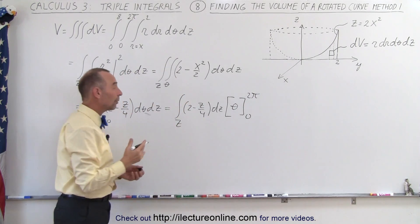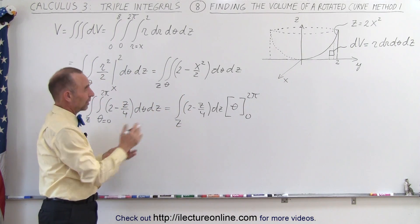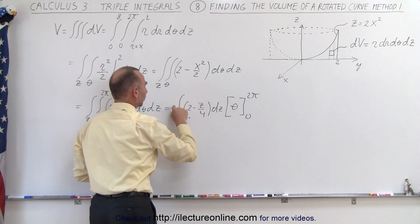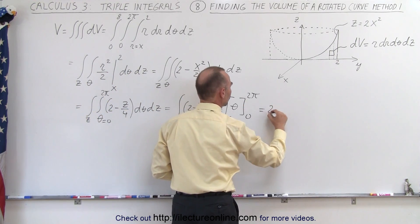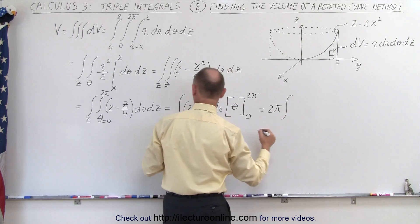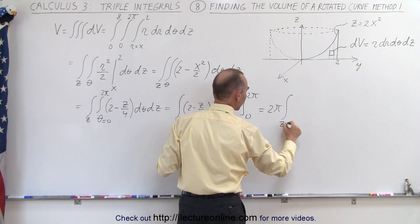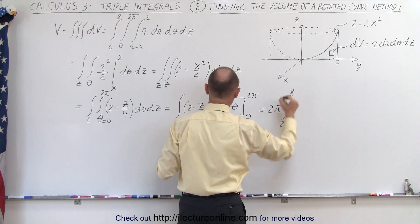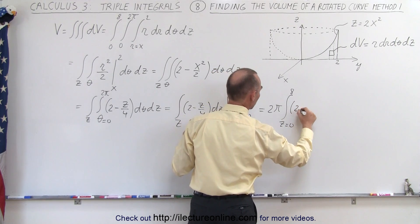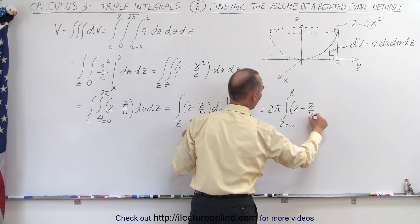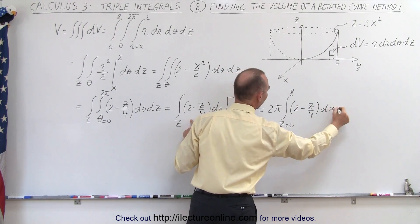Now when we integrate that, of course we end up with 2π when we plug in 0 we get nothing, and so 2π goes into the front. So this becomes 2π times the integral from z equals 0 to z equals 8, and then we have the quantity 2 minus z over 4 times dz left.